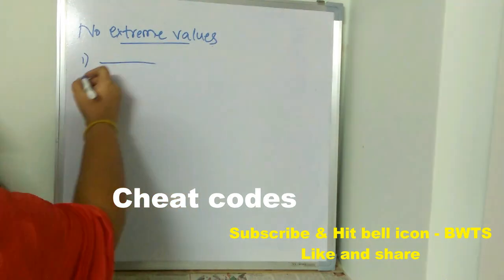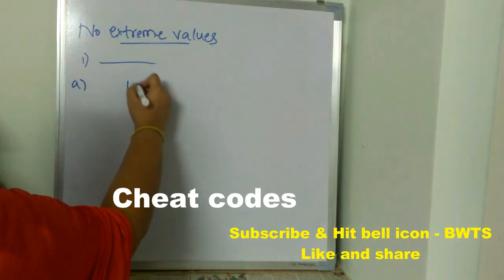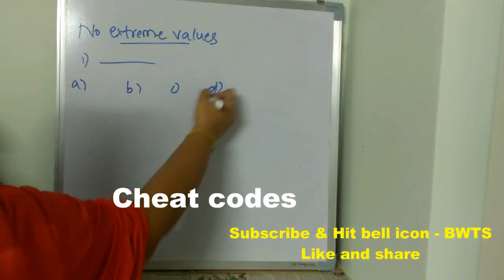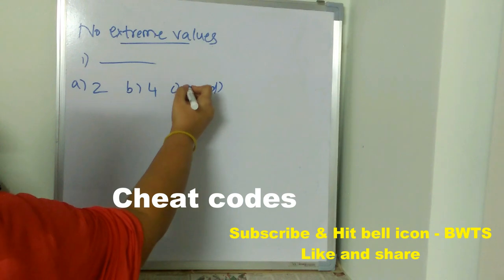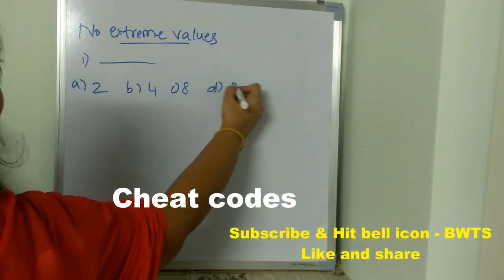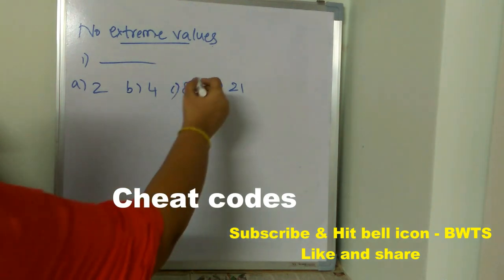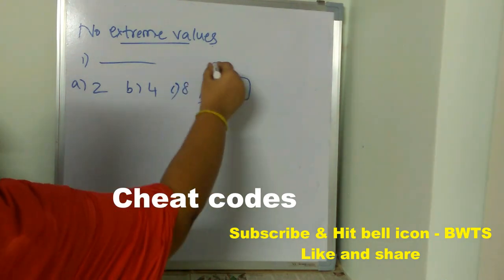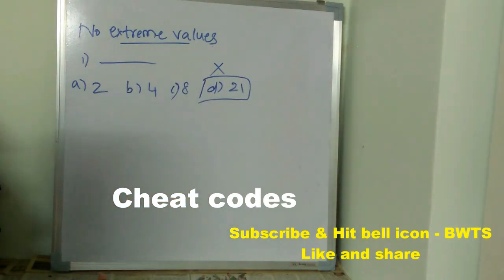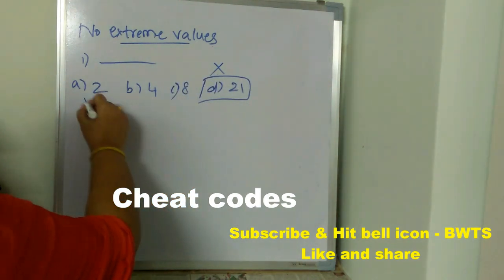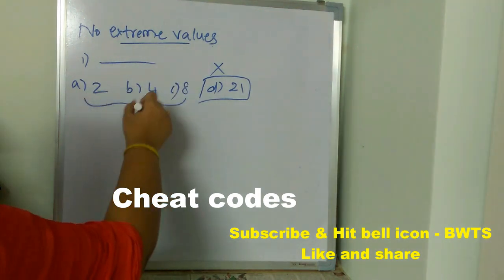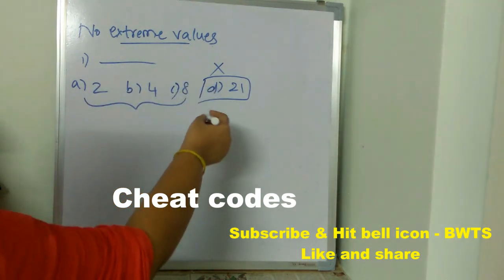Cheat code: No extreme values. What does this mean? For example, there's a question and there are four options. Option A is 2, option B is 4, option C is 8, option D is 21. So out of these four options, which one is having extreme value? Extreme means different value. This 21 is having different value, so you can't put this as answer. You have to guess only, you have to put only one of these three options as the answer. You should avoid extreme values.